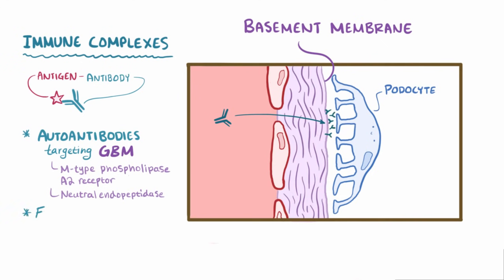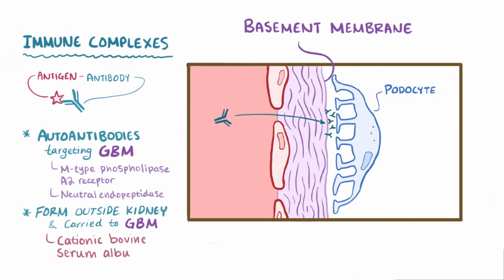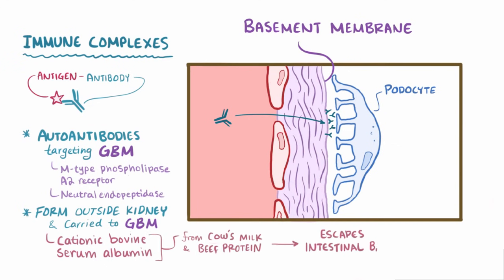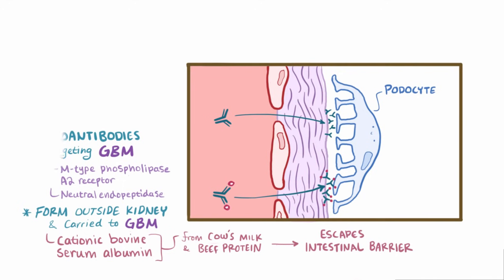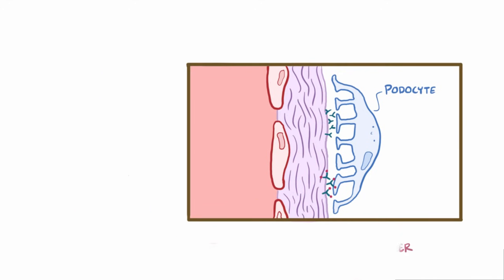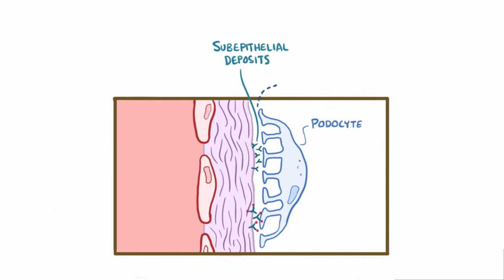Immune complexes might also form outside the kidney, and then get carried through the bloodstream to the glomerulus and deposit in the basement membrane. One potential circulating antigen that's been identified is cationic bovine serum albumin, which is present in cow's milk and beef protein, and can escape the intestinal barrier, cause immune complex formation, and deposit in the GBM. Whether they bind directly to the GBM or come from somewhere else, these immune complexes are called subepithelial deposits because they're sandwiched right between the epithelial cells and the GBM.